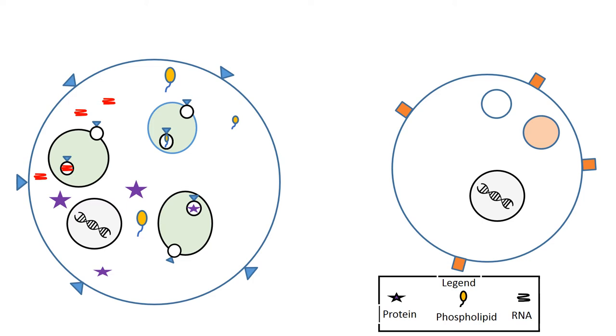This is where the exosomes are made and packaged with the certain cargo they're carrying. This is like the shipping center for sending a package. To enter, the cargo buds into the MVB, taking some of the MVB's membrane with it. This membrane makes the exosome that surrounds the cargo.